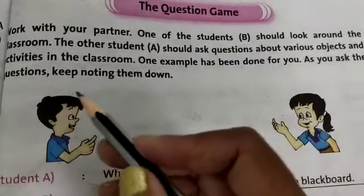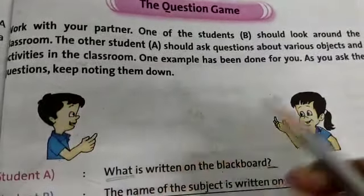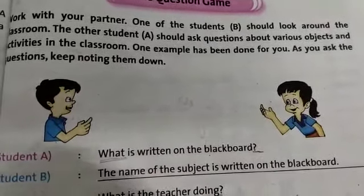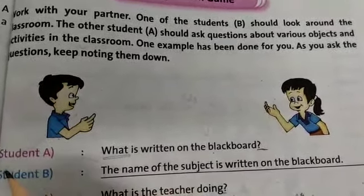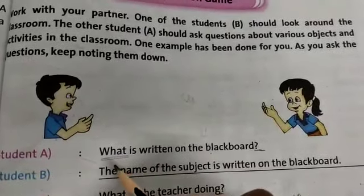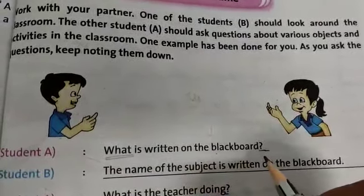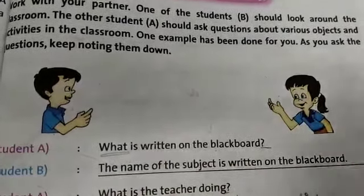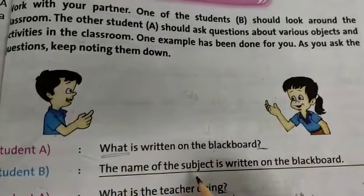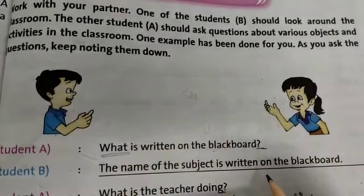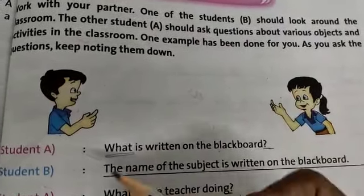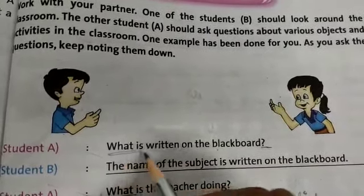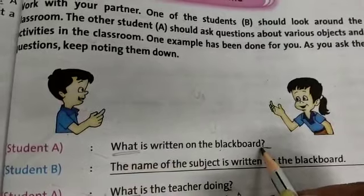As you start asking the question, keep noting them down. For example, a student has asked the question: 'What is written on the blackboard?' The answer is: 'The name of the subject is written on the blackboard.' So 'what' has been used in the question, and a question mark at the end.